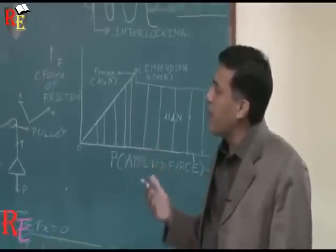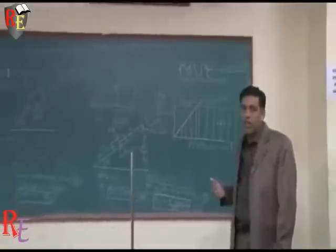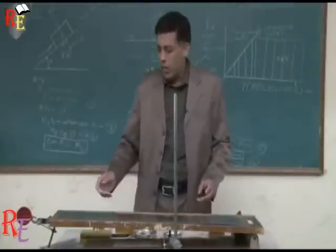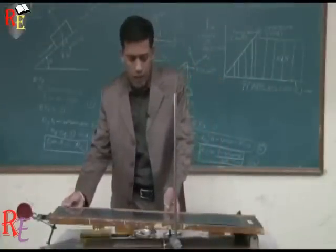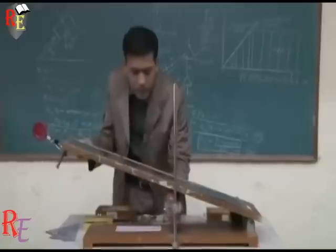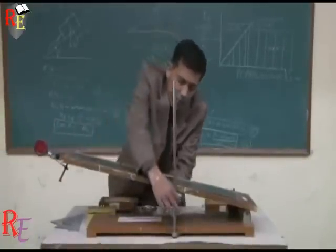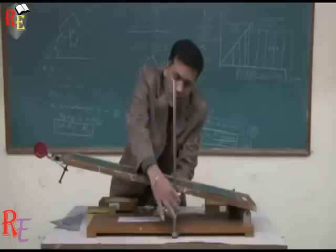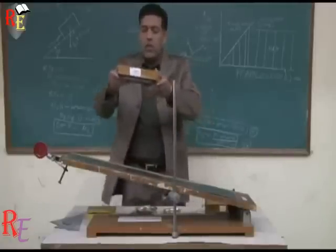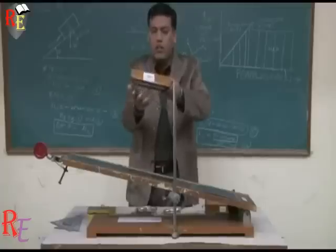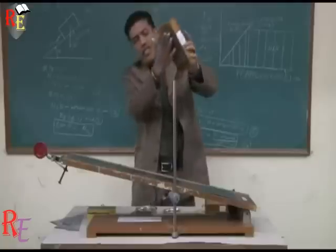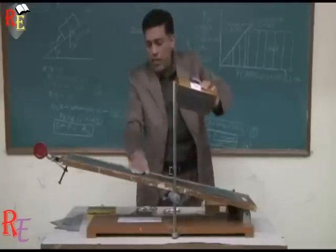There are two methods to determine the coefficient of static friction. The first is the angle of repose method. In this method, I first set the incline to the minimum possible angle, place the trolley on the incline, and determine the coefficient of static friction between the graphite pad and the stainless steel.